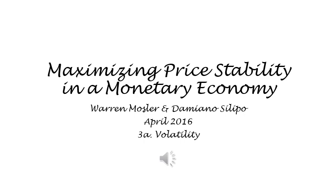The first three commodities were selected because they have been used historically, and gold has been the object of more recent proposals as well, including proposals to return to a gold standard. The fourth, an employed labor buffer stock, is a derivative of our current policy of utilizing unemployment as a buffer stock, which will be used as a basis of comparison after the analysis of the four options selected.